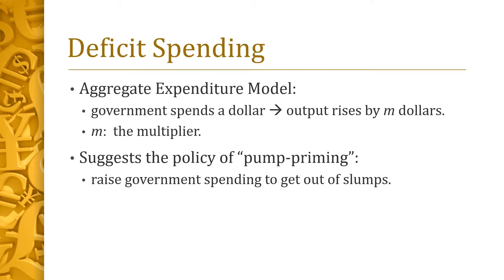First, let's briefly review some facts from Keynes's aggregate expenditure model. In that model, if the government raises spending by $1, output rises by M dollars, where M is the multiplier. This suggests that the government can get the economy out of a slump simply by raising spending. This policy is called pump priming.